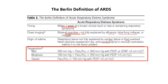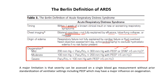A major limitation of the AECC definition was assessment of PF ratio regardless of PEEP level. The Berlin definition required a PEEP of at least 5 cmH2O or CPAP of at least 5 cmH2O. However, a major limitation of the Berlin definition is that severity can be assessed on a single blood gas measurement without prior standardization of ventilator settings including PEEP, which may have a major influence on oxygenation.